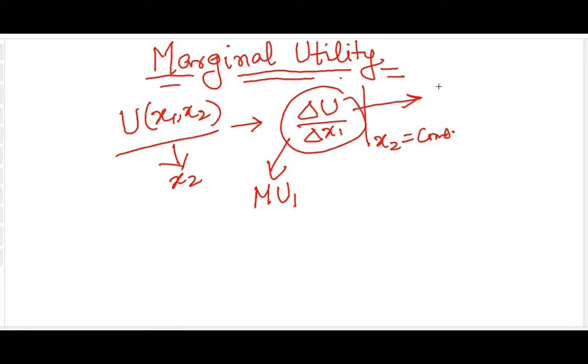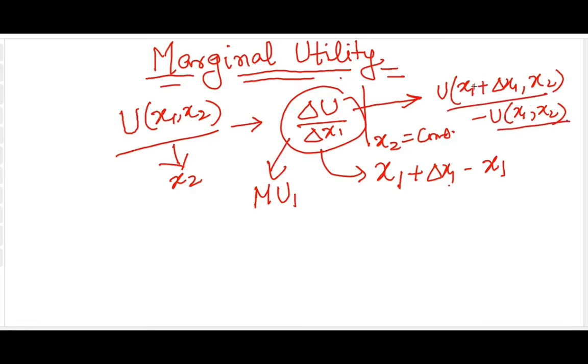Delta U is U of (x1 + delta x1, x2) minus U of (x1, x2), and delta x1 is simply x1 plus delta x1 minus x1. Just to give an idea what's happening: you're changing x1 from x1 to x1 plus delta x1, and with respect to that you have a change of utility from this to this. So this is the numerator and this is the denominator.